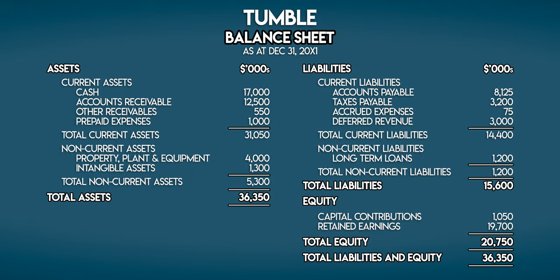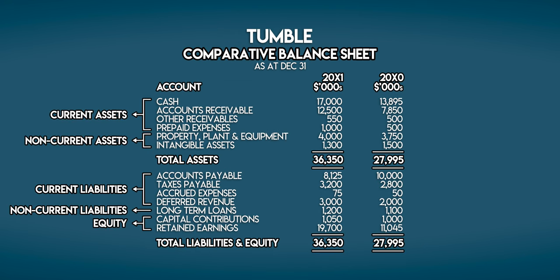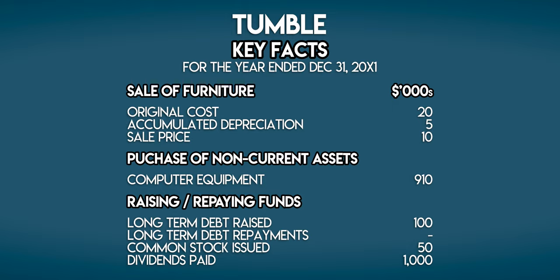And here's Tumble's balance sheet, which we made in the balance sheet video. It shows us a snapshot of their assets, liabilities and equity at the end of the year. But hold on — we're using the indirect method so we actually need to see last year's balance sheet as well. So this is Tumble's comparative balance sheet, with the current year on the left and last year's on the right. Here are some key facts which happened during the year: Tumble sold some furniture for $10,000 which originally cost them $20,000 and had been depreciated by $5,000 — the loss on the sale was charged to general and admin expenses. Tumble also spent $910,000 on computer equipment. They raised $100,000 in long-term debt and made no repayments. And finally, they issued $50,000 in common stock and paid out $1 million in dividends.